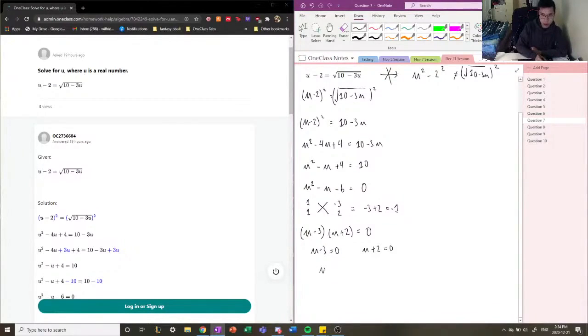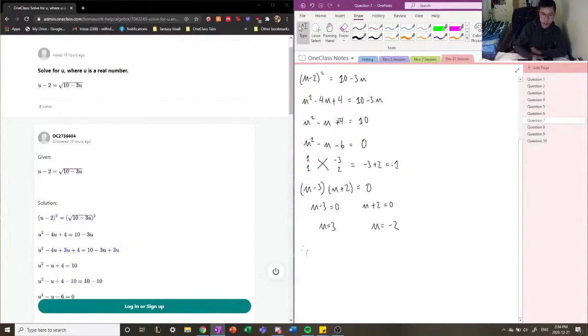This equals zero when u equals three, and this equals zero when u equals negative two. So we have found our values that will make our top equation true, which is u minus two equals square root of 10 minus three u, when u is equal to three or negative two. That is the solution to our problem.